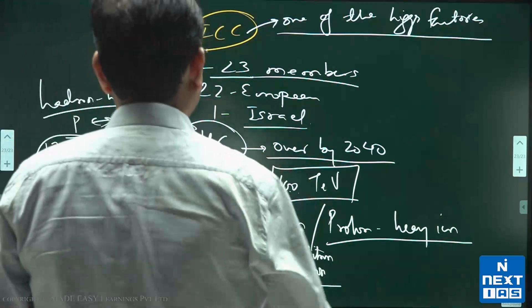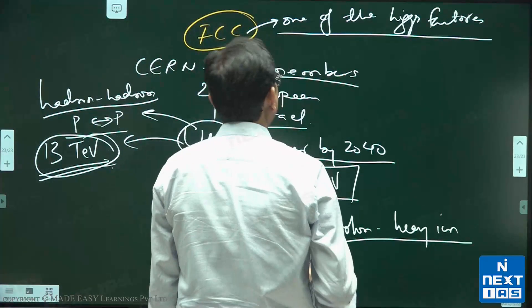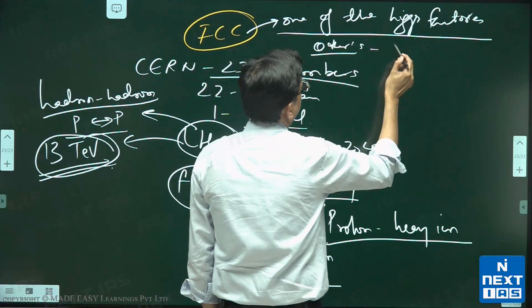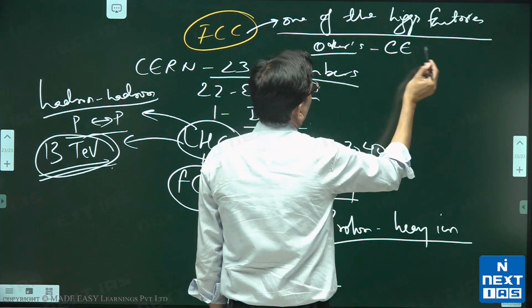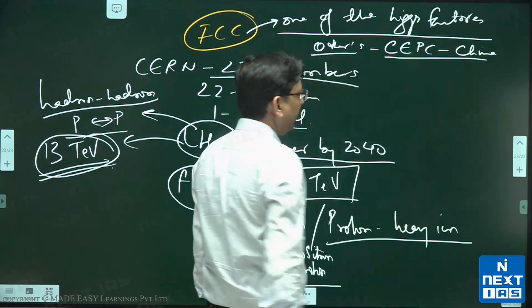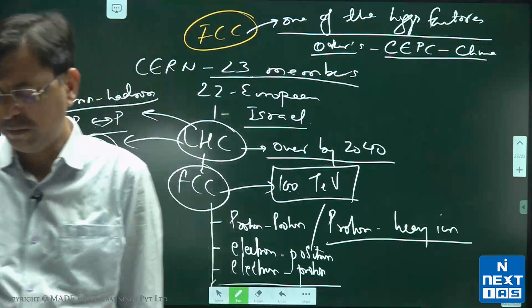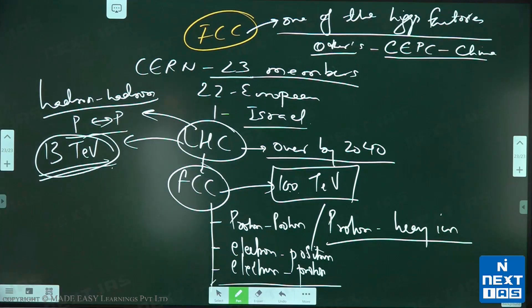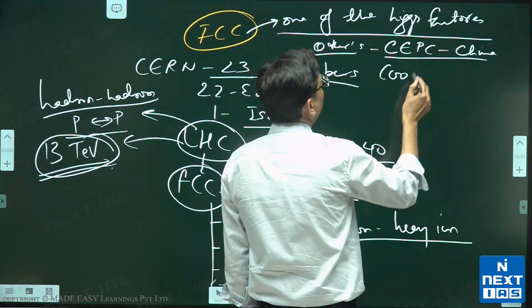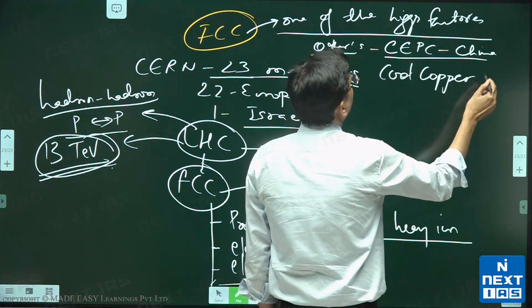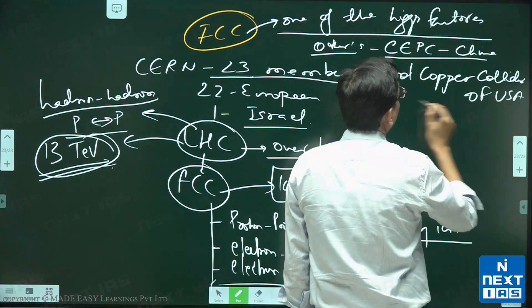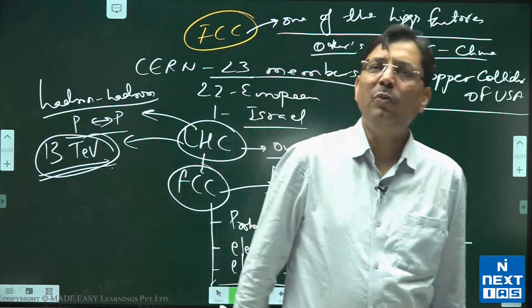The other Higgs factories are the Circular Electron Positron Collider of China and the Cool Copper Collider of USA. All these three will be called Higgs factories.